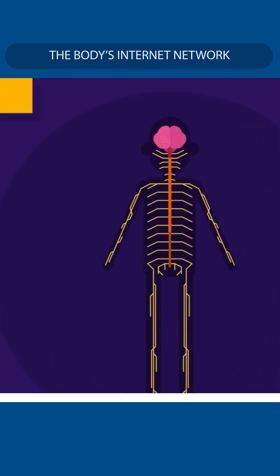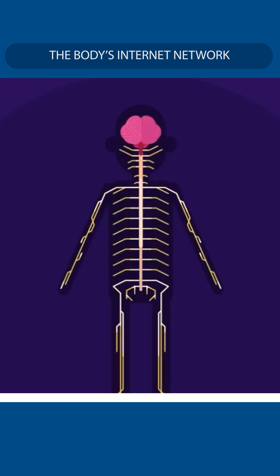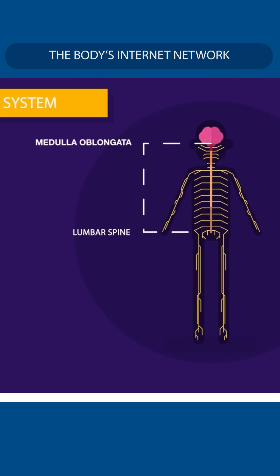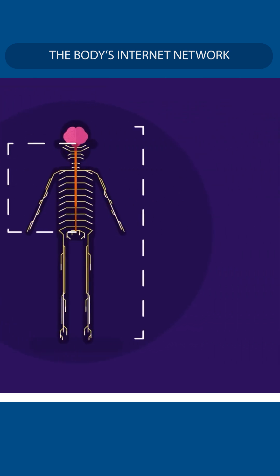The central nervous system comprises the brain and spinal cord. The spinal cord is the bridge that connects the brain to the peripheral nervous system. It starts from the medulla oblongata and stretches to the lumbar region of the spine or vertebral column. The peripheral nervous system is a network of nerves spread across our body.